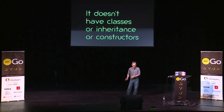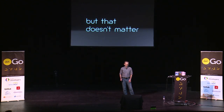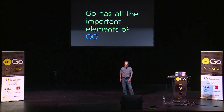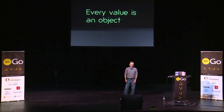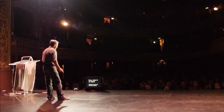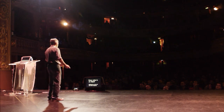Go is not a classical OO language. We don't have classes or inheritance or constructors, but that doesn't matter. Go has all the important elements of OO. In Go, every value is an object, although we don't tend to call them that. But these objects have local state, and they have behavior, and they have public and private access.